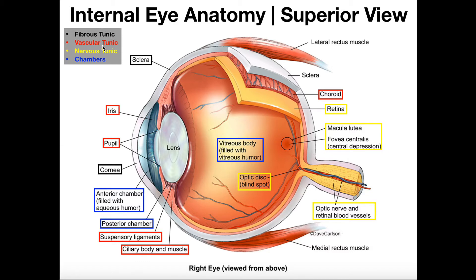The next tunic is the vascular tunic, which implies a blood supply. There are actually more parts to this. The first is called the choroid — this is the one most people think of when they think of the vascular tunic. The choroid is this pigmented part of the eye; here it's colored red, but on a model it'll appear as a dark brown or maroonish color. It has plenty of blood vessels — arteries and veins. The purpose of the pigment is to absorb excess light and prevent it from penetrating and damaging deeper tissues.